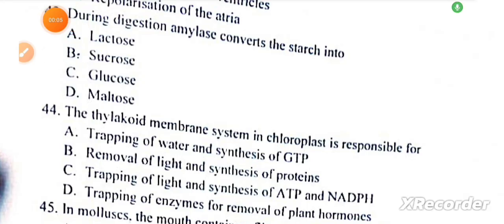Question number 44: The thylakoid membrane system in chloroplasts is responsible for trapping light and synthesis of ATP and NADPH.